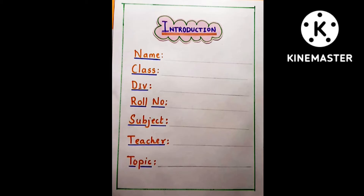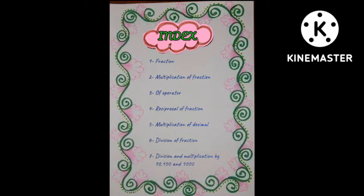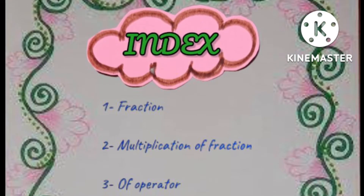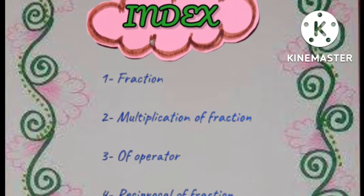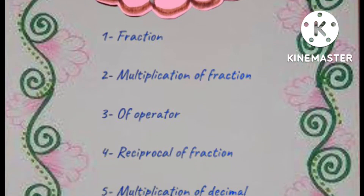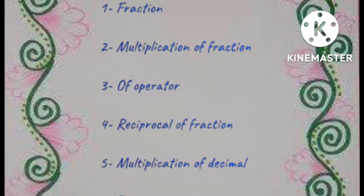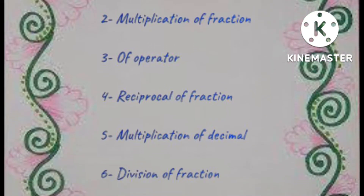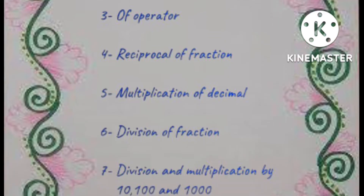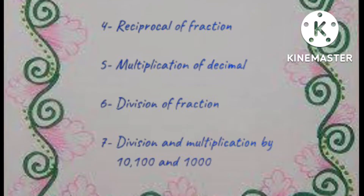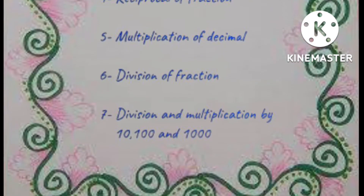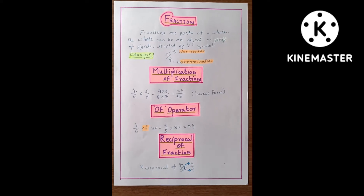The first page is the introduction — name, class, division, roll number, subject, teacher, and topic. Here is the index: fraction, multiplication of fraction, 'of' operator, reciprocal of fraction, multiplication of decimals, division of fraction, and division and multiplication by ten, hundred, and thousand.